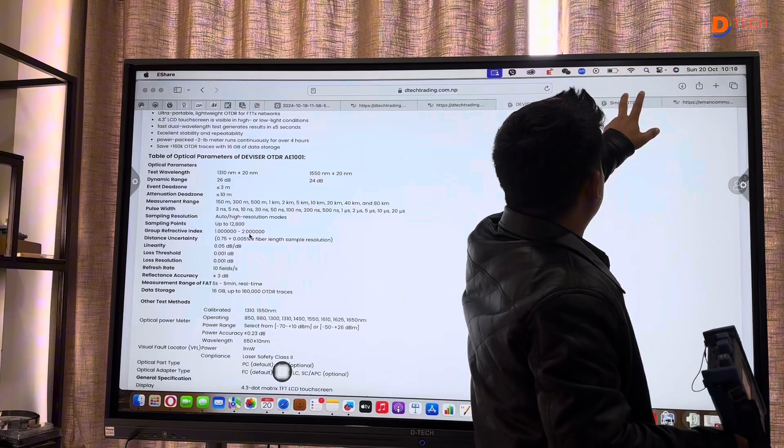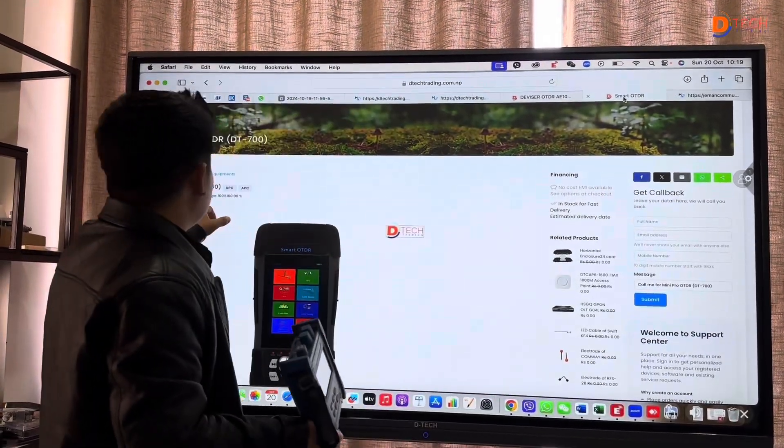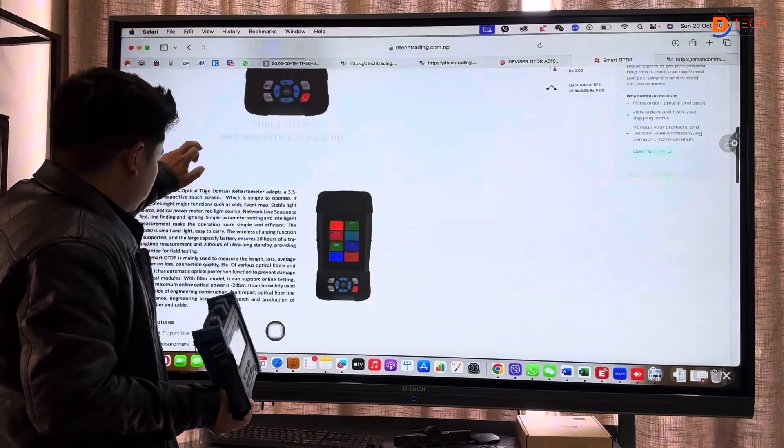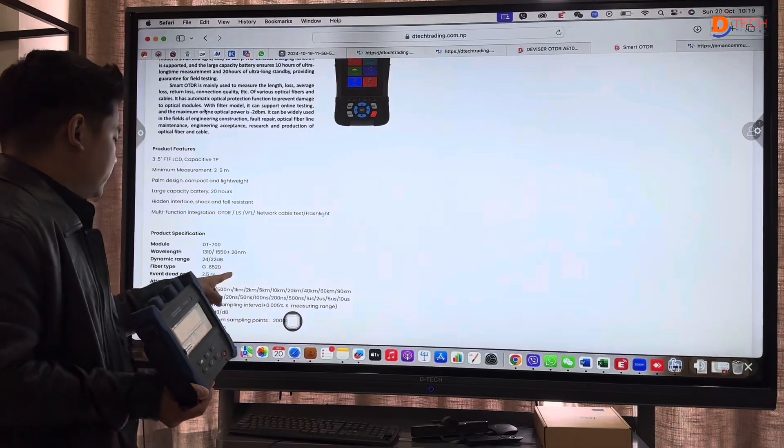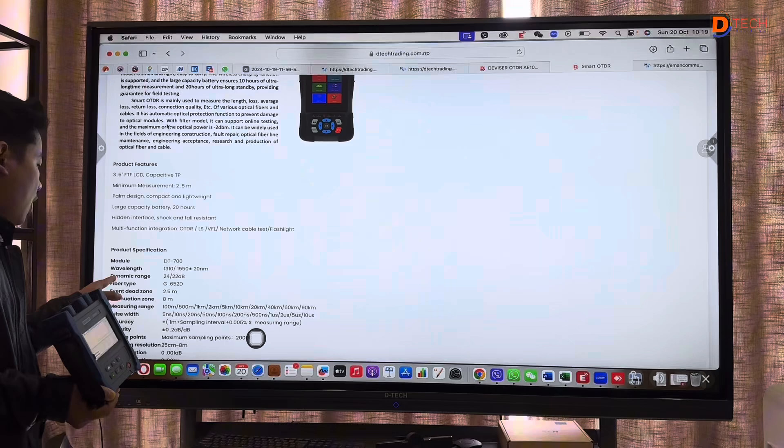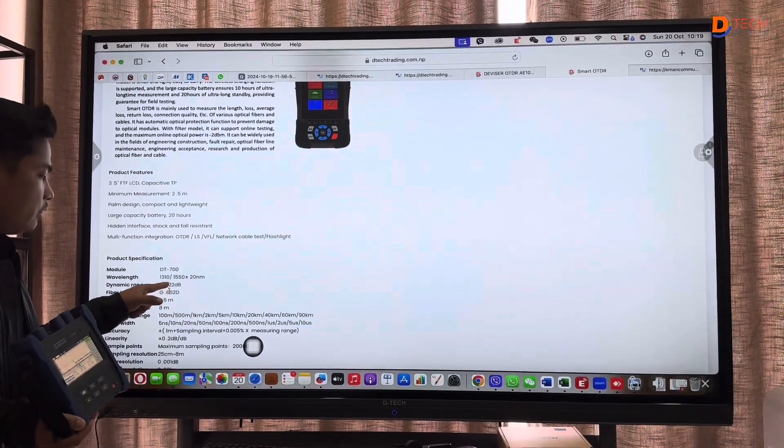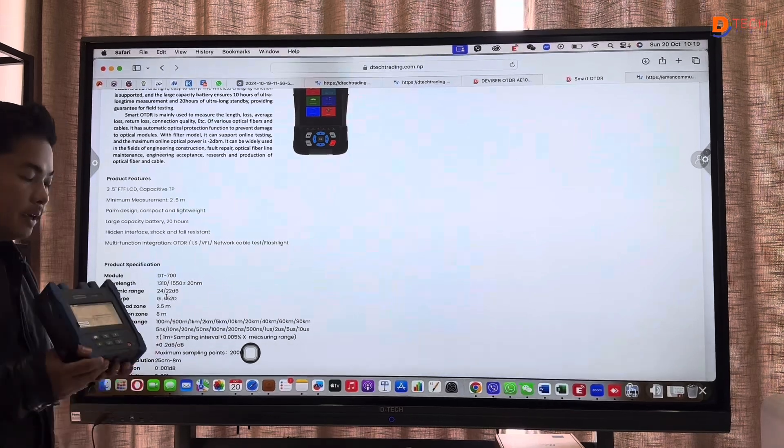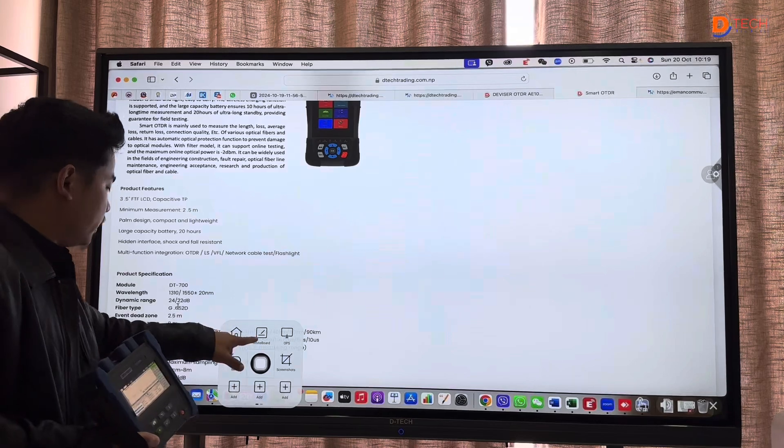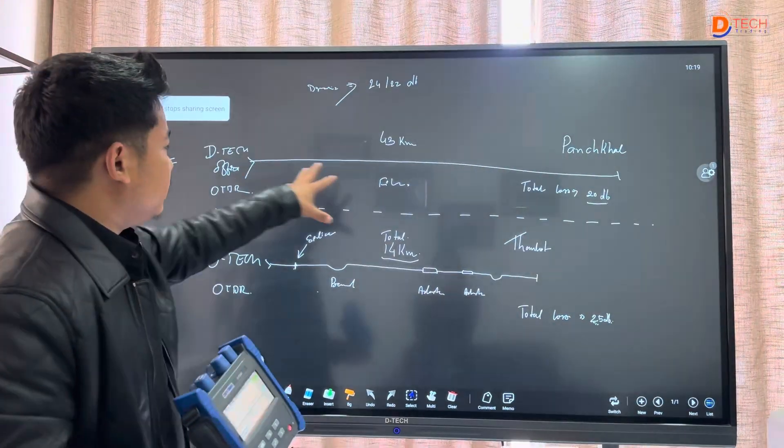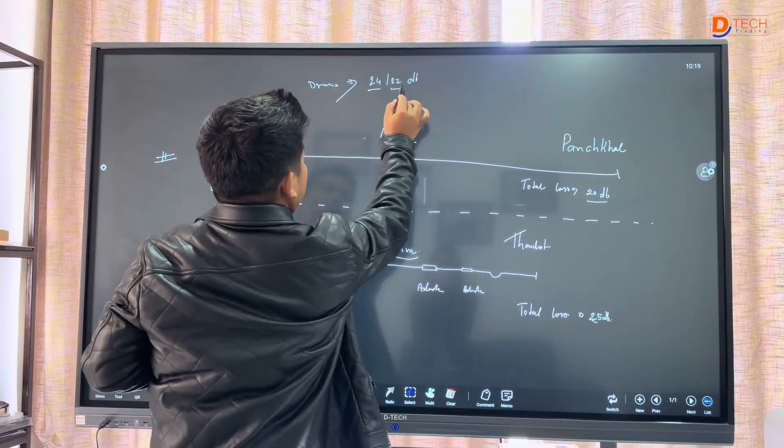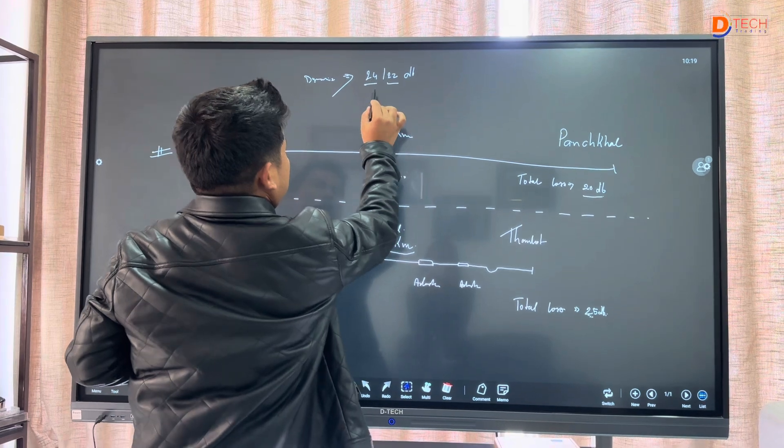Similarly, the Smart ODDR700 has a range of 90 kilometers. The dynamic range refers to the total loss the device can measure.